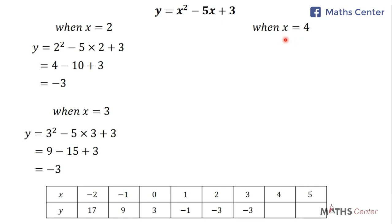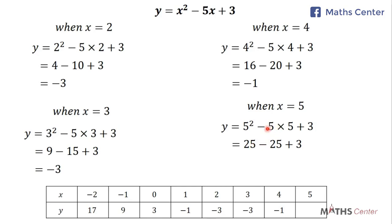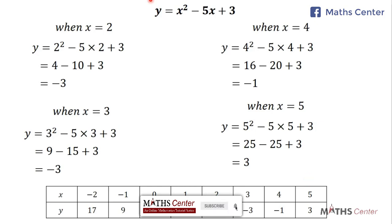When x = 4, y = 4² - 5 × 4 + 3 = 16 - 20 + 3 = -1. When x = 5, y = 5² - 5 × 5 + 3 = 25 - 25 + 3 = 3. We have now completed the table for the relation y = x² - 5x + 3.